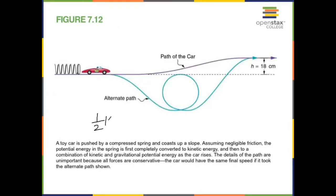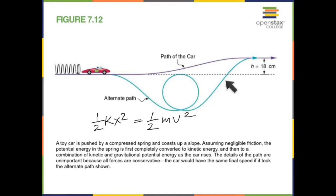Another application of conservation of energy: a toy car is released by pushing it against a spring. The potential energy in the spring, which is one-half K x squared, becomes the kinetic energy of the car, which is one-half mass times velocity squared. When the car loops a loop and goes to a height h, all that kinetic energy becomes gravitational potential energy. So one-half M v squared equals M g h. This shows how energy changes from elastic potential energy, to kinetic energy, and then to gravitational potential energy.